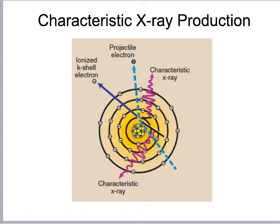Unlike bremsstrahlung's continuous spectrum, characteristic radiation produces a discrete spectrum — specific spikes at precise energy levels tied to electron binding energies. The region where K-shell interactions start occurring is called the K edge. Characteristic interactions at lower shells (L, M, N) fall in the garbage x-ray range, so only the K-shell interactions are diagnostically useful.